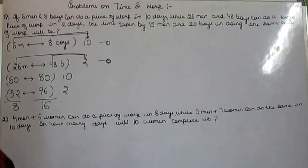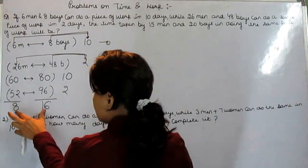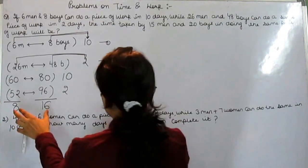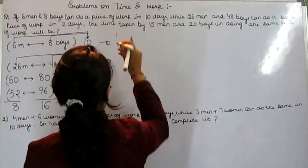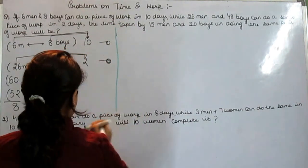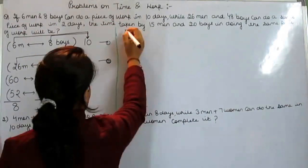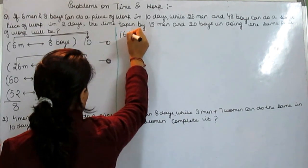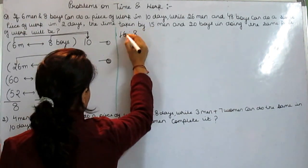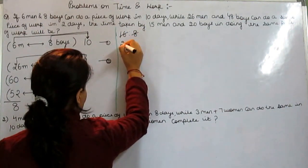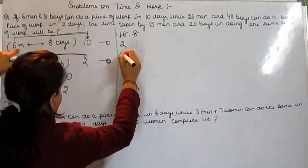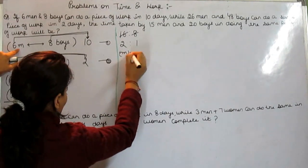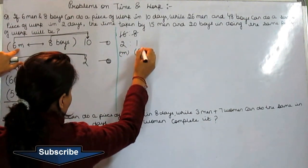Now put these 2 ratios diagonally. That is 16 ratio 8. This is 2 and this is 1. 2 is the ratio of men and 1 is the ratio of boys.